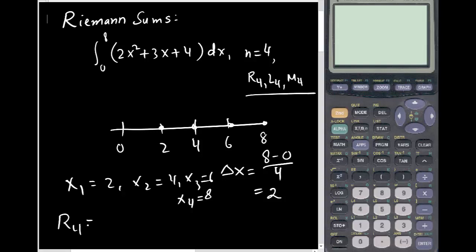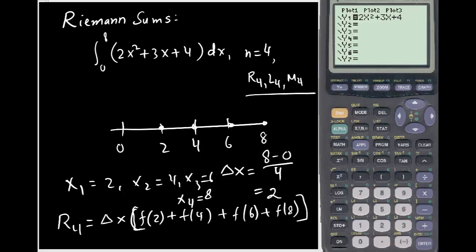When you are looking for right Riemann sum, this one will be Delta X times [f(X1), which is 2, plus f(X2), which is 4, then f(X3) is 6, and then f(X4) is 8].